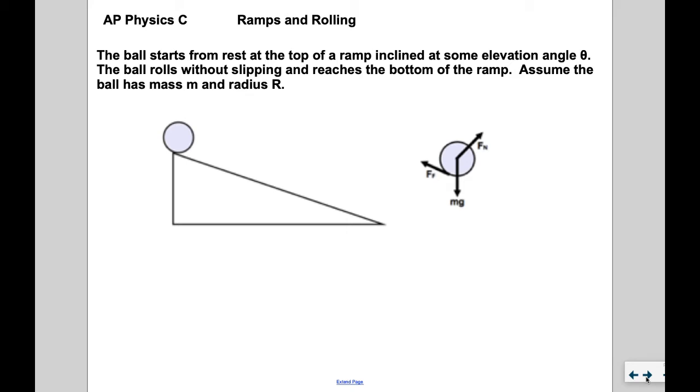The AP exam is fond of objects rolling down ramps. We have an object that starts from rest at the top of a ramp inclined at elevation angle theta. Instead of sliding down the ramp, the ball rolls down without slipping. The ball has mass M and radius R.